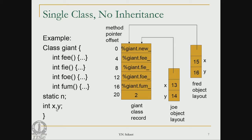The class record contains pointers to fum, pho, phi, and phi, and of course new which is available everywhere to create new objects. The object layout will have two fields x and y, plus a field which points to the class record.